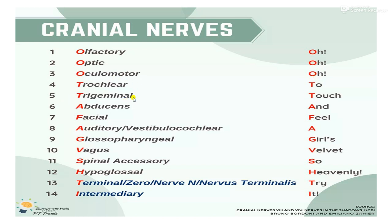Then Trochlear nerve — 'Tooth.' Then 'Touch' — Trigeminal nerve. Then Abducens. Then Facial nerve. Then Auditory or Vestibulocochlear nerve. Then Glossopharyngeal nerve. Then Vagus nerve — 'Velvet.' Then Spinal Accessory nerve. Then Hypoglossal nerve — H, 'Even.'